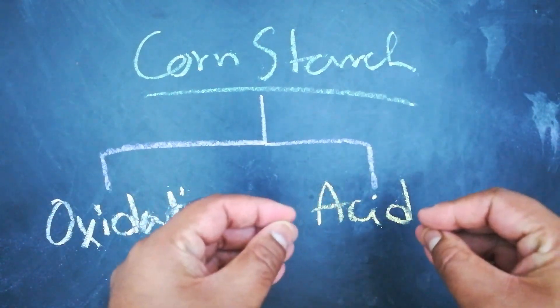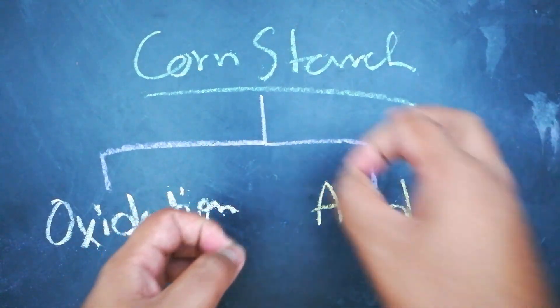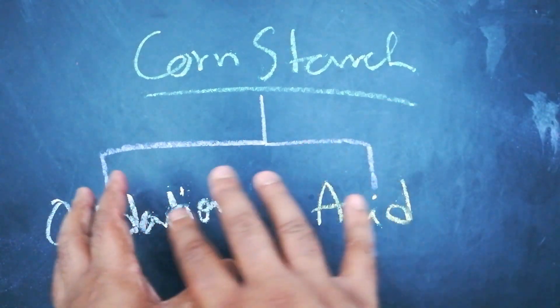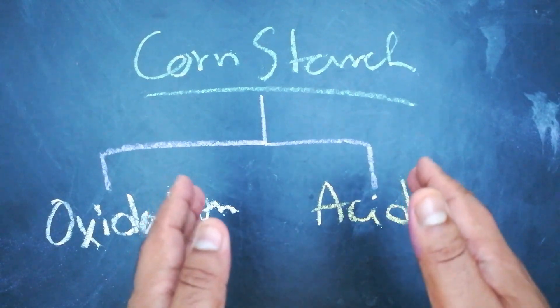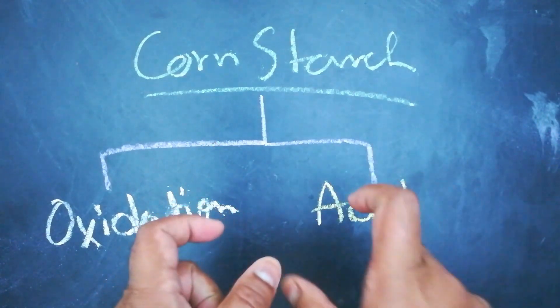And when the acid modification is used, then cornstarch is actually added to water, then it's heated up, and then mild acid is added to it to make the modification. When it reaches the modified state, then the acidification is neutralized with something that can neutralize it, and in most cases that is sodium carbonate.